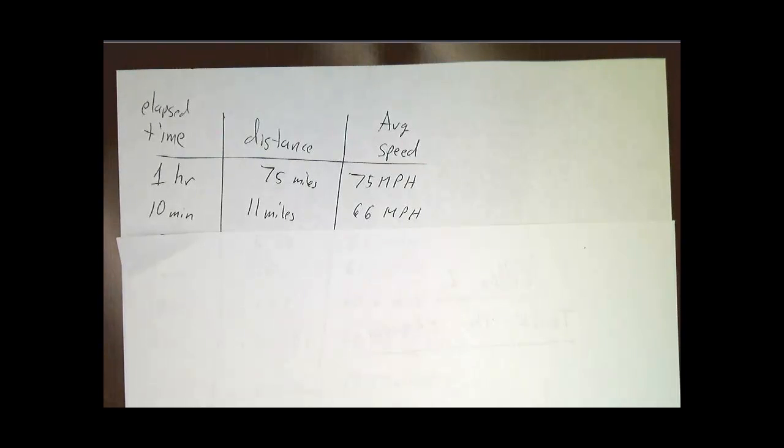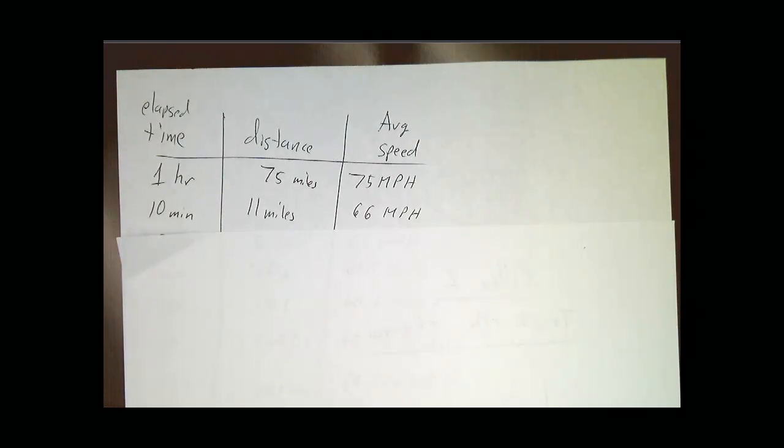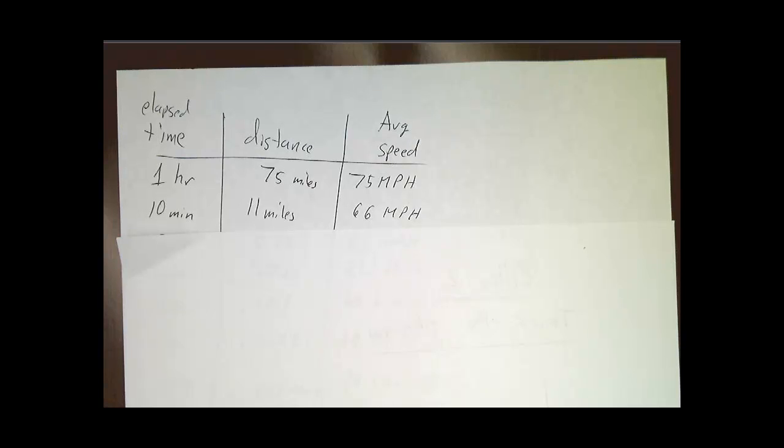Now you don't want to give too much weight to what happened half an hour ago, so you get a better estimate by looking at what happened over the last 10 minutes. If over the last 10 minutes you went 11 miles, well in the last 10 minutes you were averaging 66 miles an hour. That's a better guess of how fast you're going right now than averaging over the last hour.